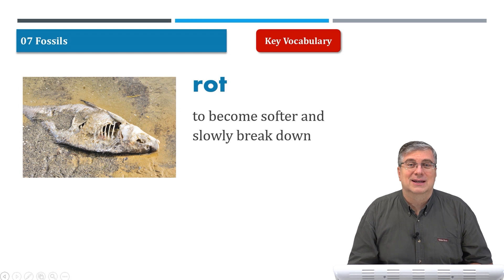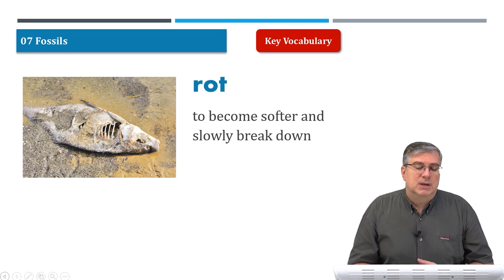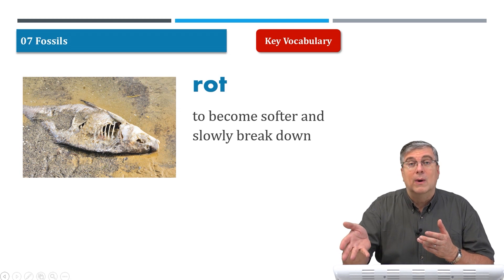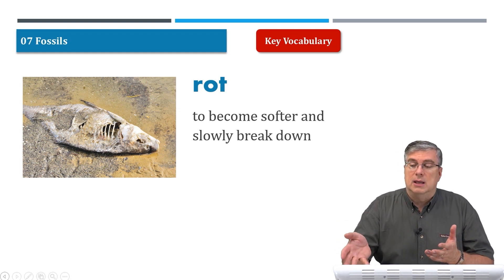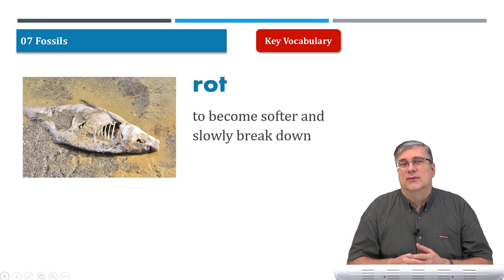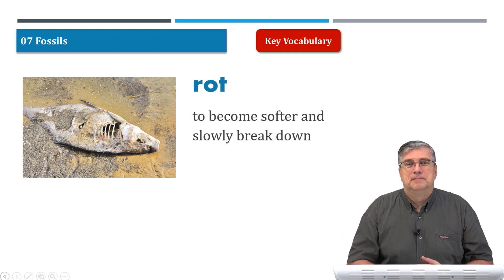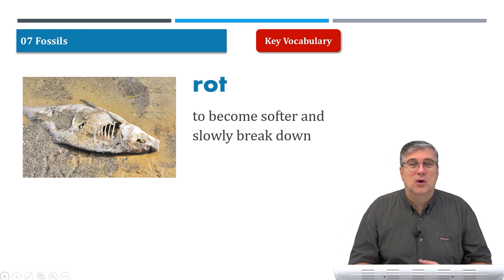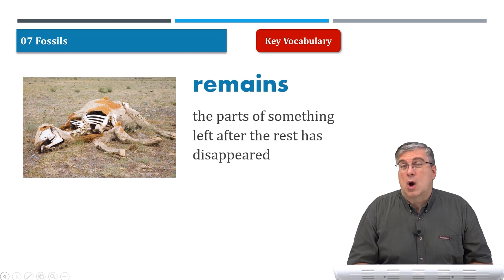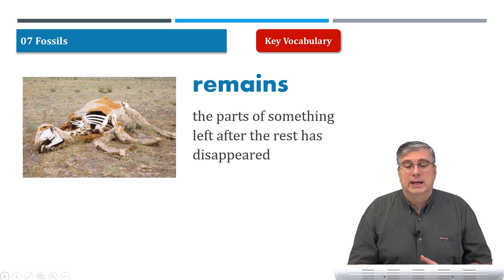The dead fish slowly breaks apart and becomes part of the soil. Rot means to become softer and slowly break down — it's not just animals, but also any fruit or vegetable. A lot of food that you throw away on land will rot and go back into the soil, which is good for the soil. Hopefully we can recycle it to make better soil.